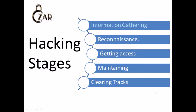The first and foremost stage is information gathering. Before getting into any real hacking scenario, every attacker or hacker does information gathering. Reconnaissance includes footprinting, OS fingerprinting, and all that. After successful exploitation, the next thing is getting access — this is the main stage where an attacker gets all the access to the systems.